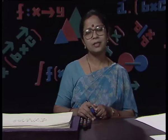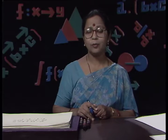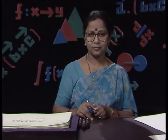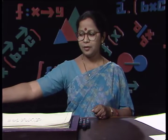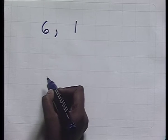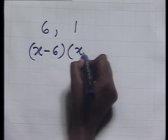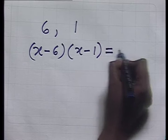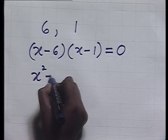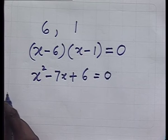But suppose we have to construct an equation whose roots are given as 6 and 1 — what do we do? Naturally, we think of the factors which gave us these roots. If the roots are 6 and 1, then the factors are (x - 6) and (x - 1). When we multiply them and equate to 0, we get the equation x² - 7x + 6 = 0.